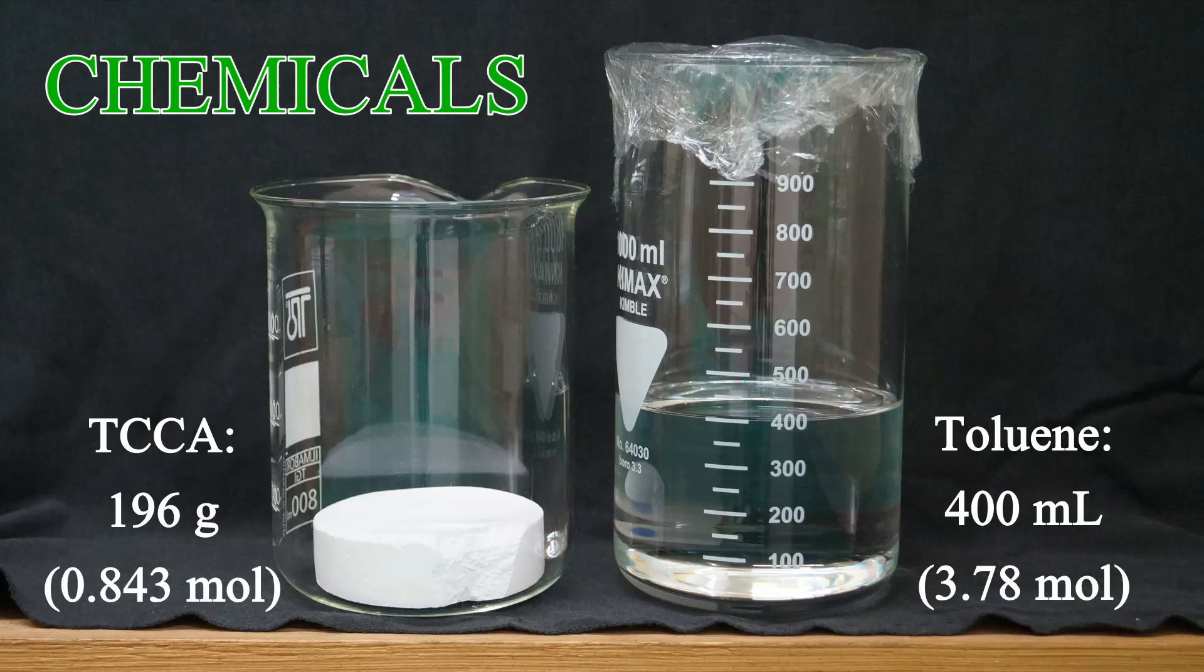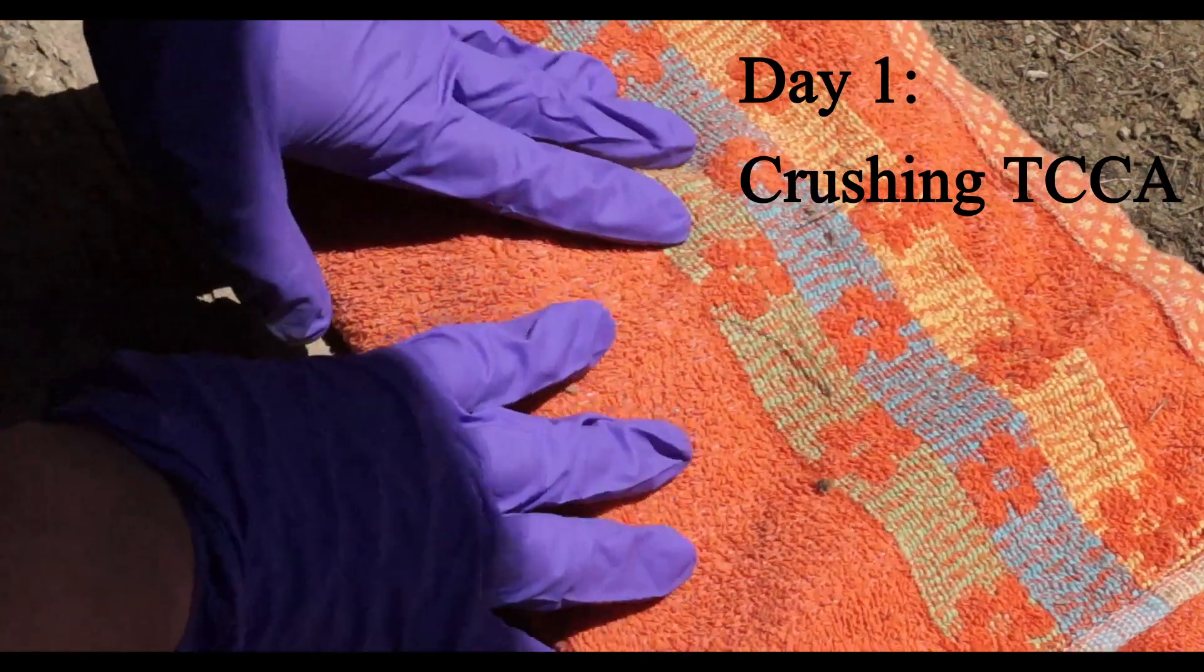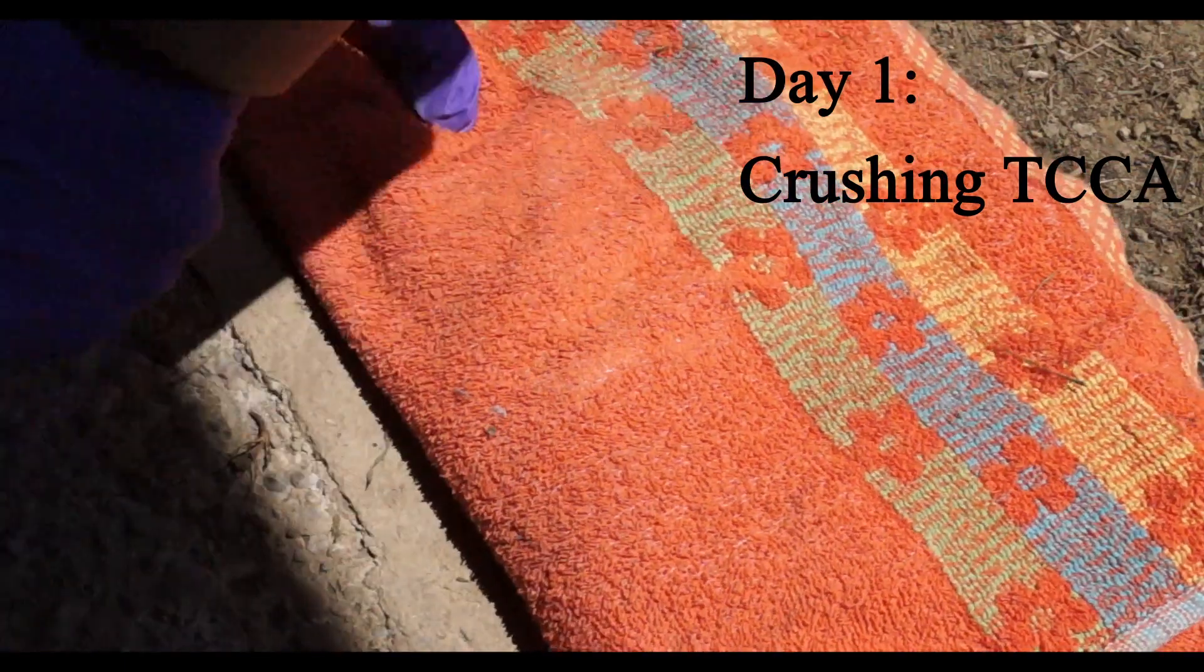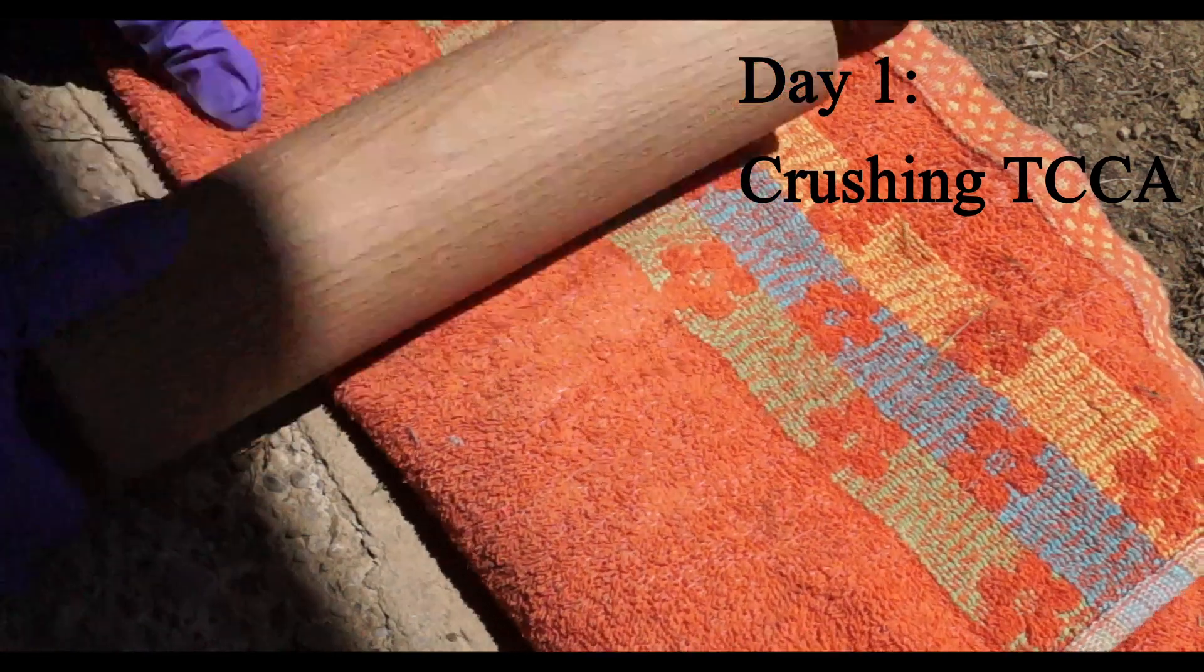The strong sunlight will serve as a radical initiator, and that is why I did this reaction outside. First, I had to transform the large solid chunk of TCCA to a powder. I used a nice big rolling pin as it was intended to be used by angry housewives on their cheating husbands.